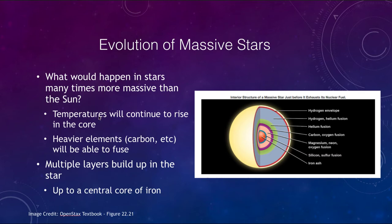In this case, when something is more massive than the sun, the temperatures will continue to rise. And that means eventually we'll get to the point where carbon is able to fuse together. And we will build up multiple layers. As we see here, we go from hydrogen, the envelope,